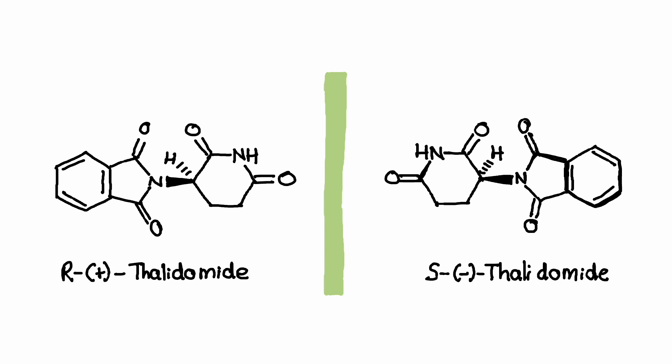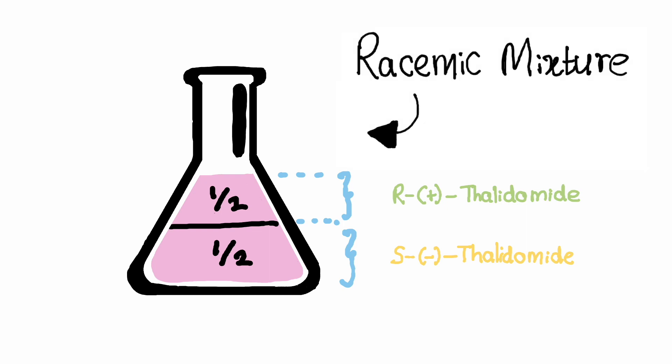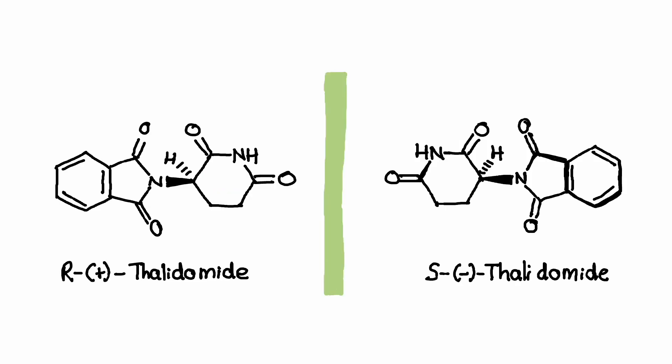A well-known example of a chiral drug is thalidomide. Thalidomide was introduced in the 1950s as a sedative and an anti-nausea medication. Unfortunately, during that time, the knowledge about the different properties of its enantiomers was not well understood. Thalidomide was sold as a racemic mixture meaning that it contained equal amounts of both the left-handed as in S enantiomer and the right-handed as in R enantiomer. It was later discovered that while one enantiomer of thalidomide was effective in alleviating symptoms, the other enantiomer caused severe birth defects when taken by pregnant women.